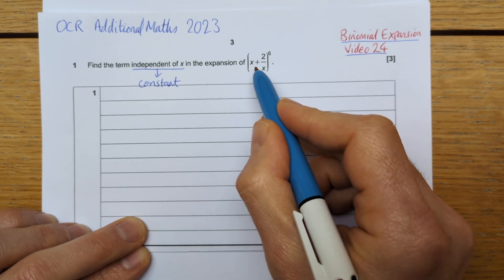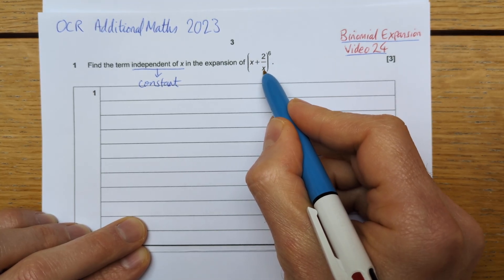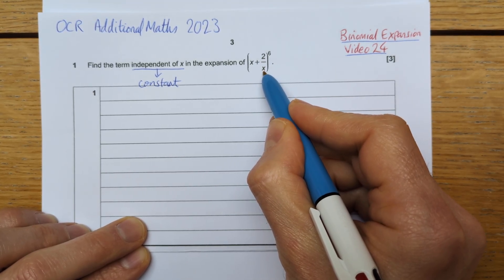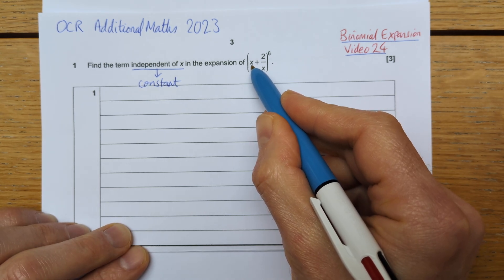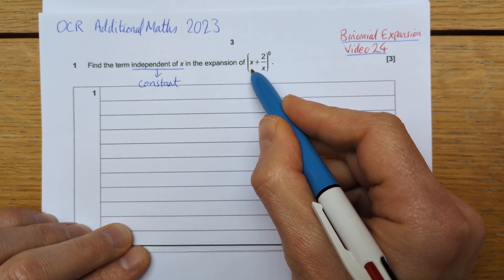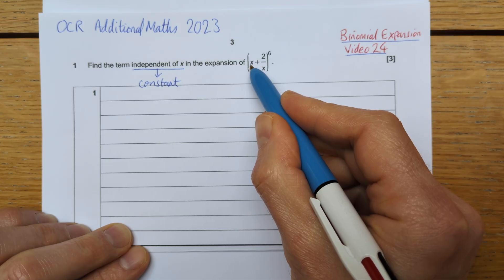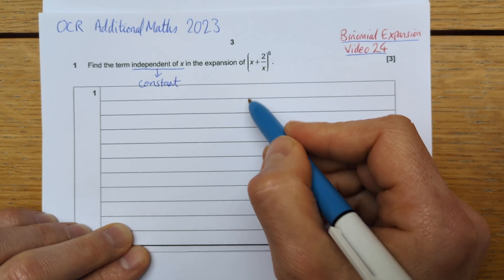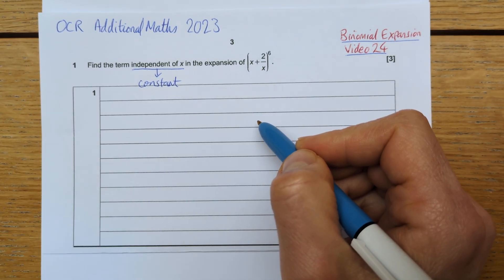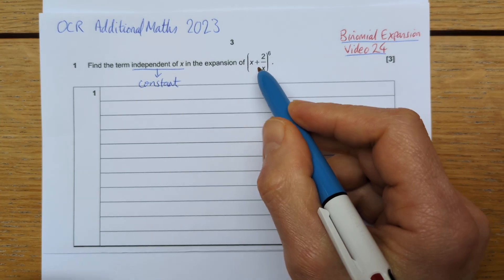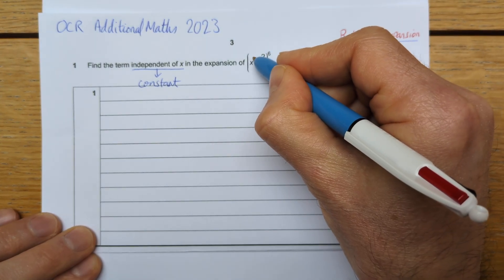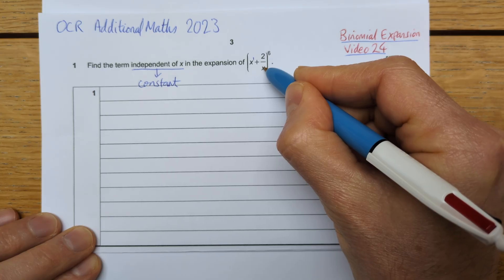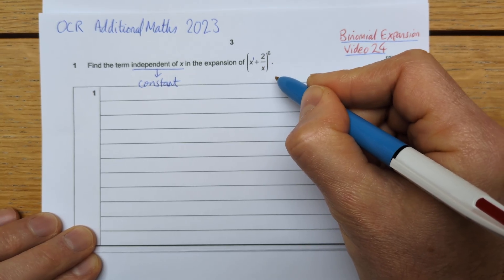But it looks like I can't get that from this because both of these terms are dependent upon x. So what I need is to be able to, in the expansion, get one term which the combination of these powers of x eliminates any power of x. And I can get that because this is an x to the power of 1, and this is in effect 2 over x, which is 2x to the power of negative 1.